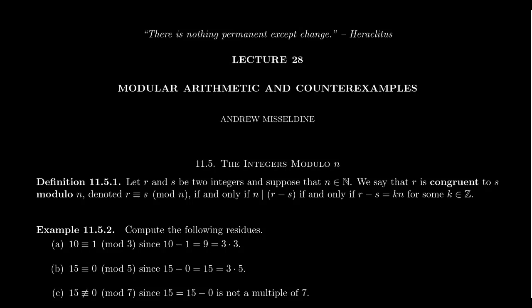The congruence relation on integers is dependent upon a number which we commonly refer to as the modulus. That modulus can be any natural number n, ranging from 0, 1, 2, 3, all the way up to any natural number you want. There are going to be different relations for different moduli, so do pay attention to that as we work throughout these examples.